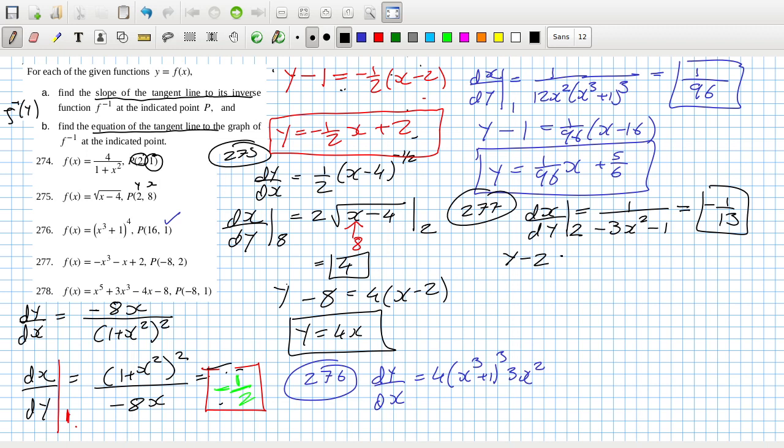So y minus y1 equals m times x minus x1. So that's y equals minus 1 over 13x, and it's 16 over 13 plus 2. That's 42 over 13? Have I done something wrong? Why did I write 16? What was I looking at? I was looking at this one. Look at this one, let's not get confused, Steven. Y minus y1, okay, so that should have been plus 8. Okay. Minus 8 over 13 plus 2. Yeah, 18 over 13.